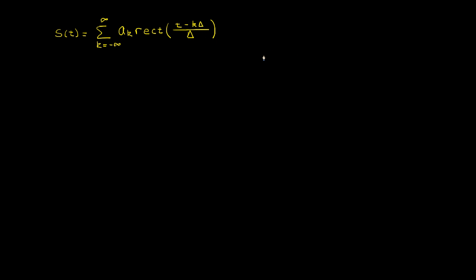So if we take a look at this, what a segment of this signal might look like in time. So when k is equal to 0, our rectangle is going to be centered at 0. It's going to have some height a 0. So this value would be a 0. And it will extend to delta over 2 in that direction and negative delta over 2 in this direction.